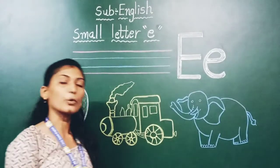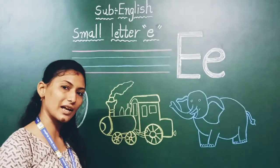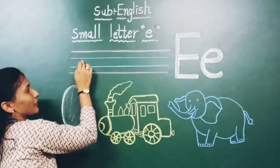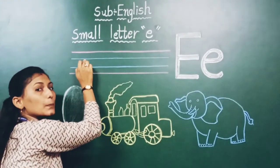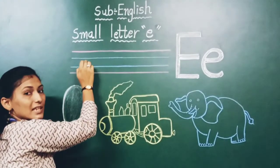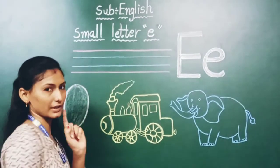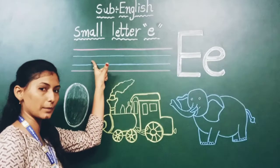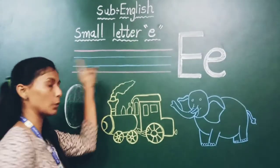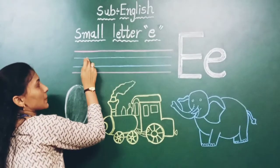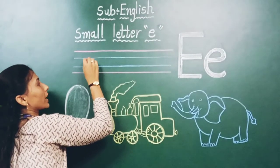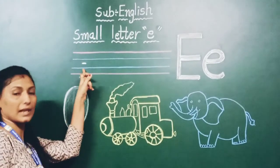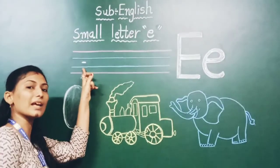आज हम आपको क्या सिखाएंगे? Small letter E, कैसे लिखना है। So let's start. Which line is this? Blue line. जब आप small letter E लिखें तो आपको कौनसी line में लिखना start करना है? Blue line में। सबसे पहले आप क्या करोगे? Blue line में sleeping line बनाना है।